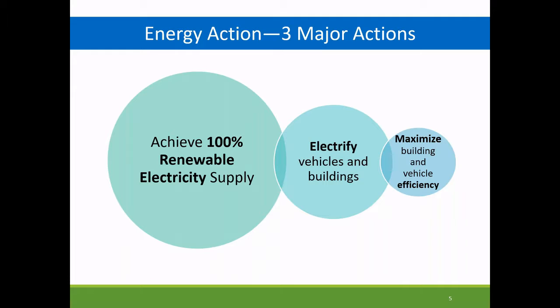From an energy perspective, we have three main action areas. Electricity is about half of total community emissions, so we have goals around 100% renewable electricity supply. Since that only gets us halfway there, we need to electrify our vehicles and buildings and push them onto that renewable electric supply. Maximizing efficiency is always critical to enabling any of that to happen.